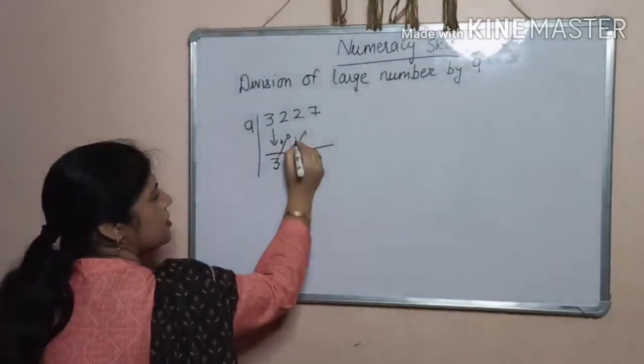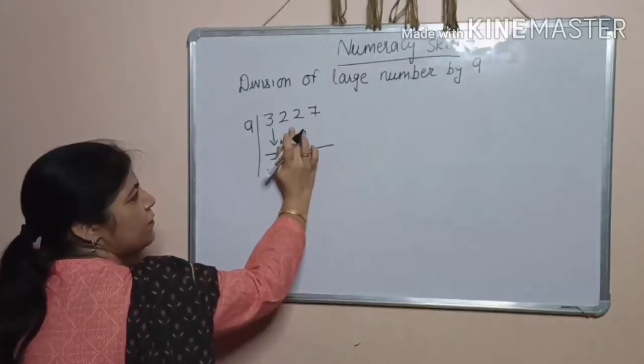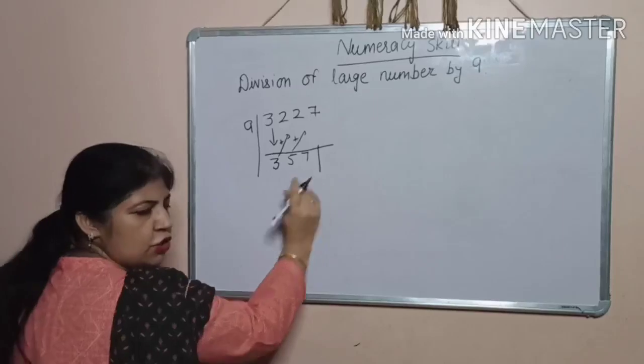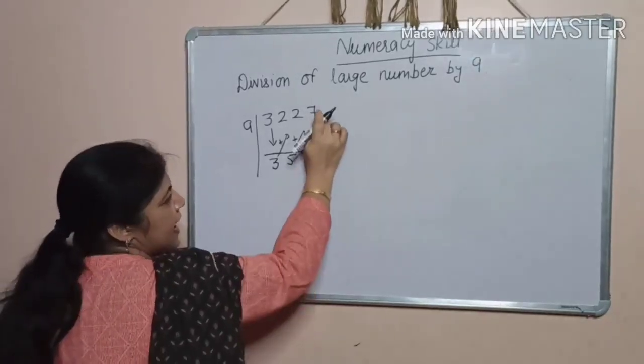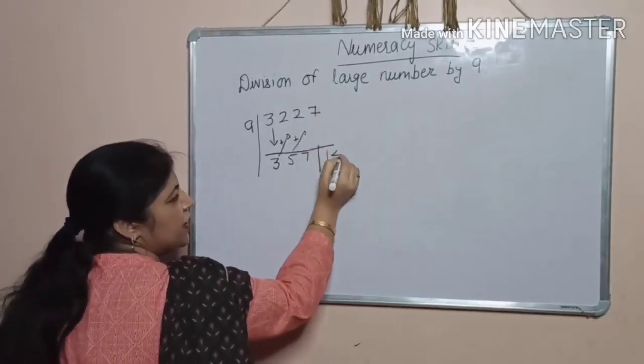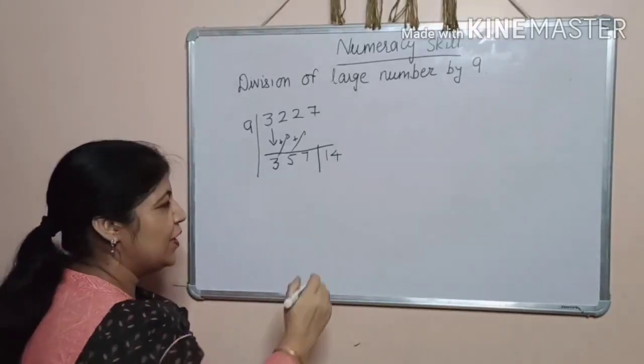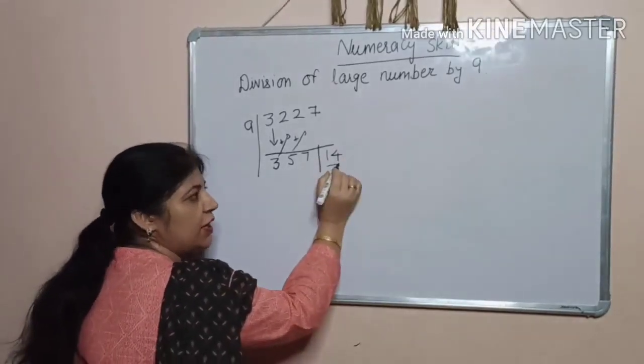Now, next, add this 5 to the next digit, you will get 7. Now, you will put stock here. Now, add 7 and 7, you will get 14. Now, 14 is your remainder.